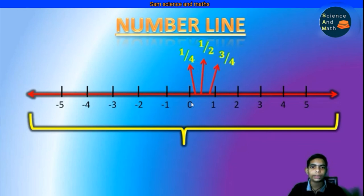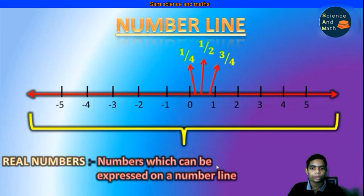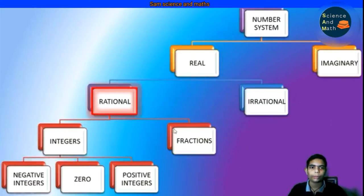So let us understand what are real numbers. The real numbers are the numbers which can be expressed on a number line. We can say that any number on a number line is a real number. This is the definition of a real number.